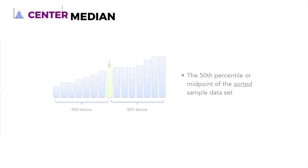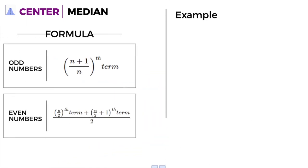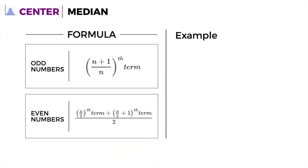The next measure of center is median. Median is the 50th percentile or midpoint of the sorted sample data set. For median, it's important to understand that its focus is more on the number of data values you have, not necessarily what these data values are. For example, we have 10, 11, 5, 3.